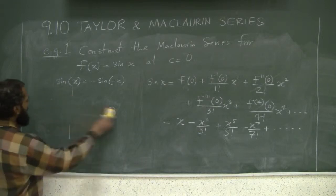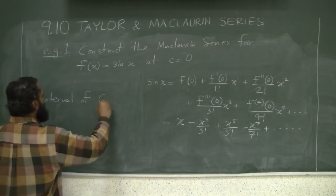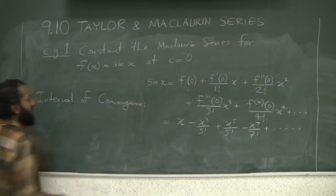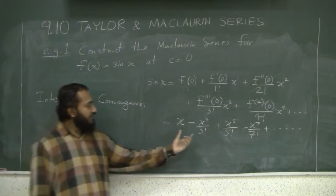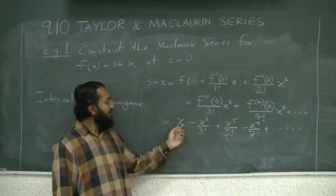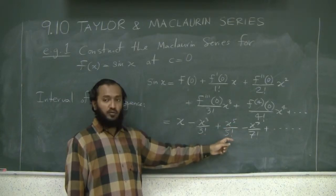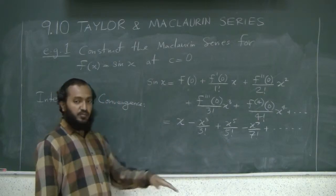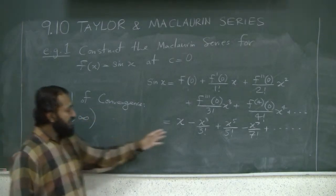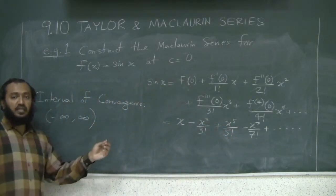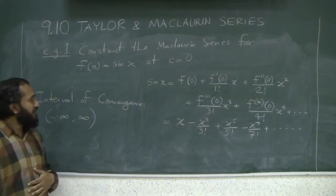The last thing to think about is the interval of convergence. You can write this formula in compact form and do the ratio test. By now you have enough experience to see that for any particular x, even if x is a billion, the numerator is exponential while the denominator is factorial. The factorial grows and beats any exponential very badly. It's going to converge for every x. So the interval of convergence here is the whole real line. This series actually equals sin(x) for every single x on the real line. This was a very easy example to get us going. We'll talk about more aspects of this in the next few lectures.